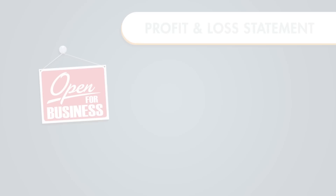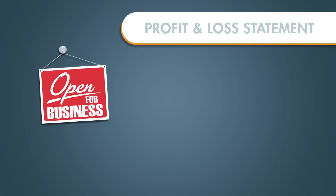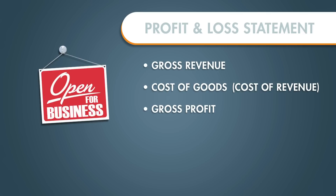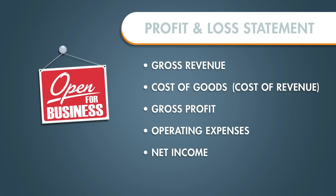Let's talk about the first one: your income statement. In any business, there are five key components you need to know about when it comes to your income statement, the financial statement, and the profit and loss. There's your gross revenue, your cost of goods or cost of revenue, your gross profit, your operating expenses, and your net income.